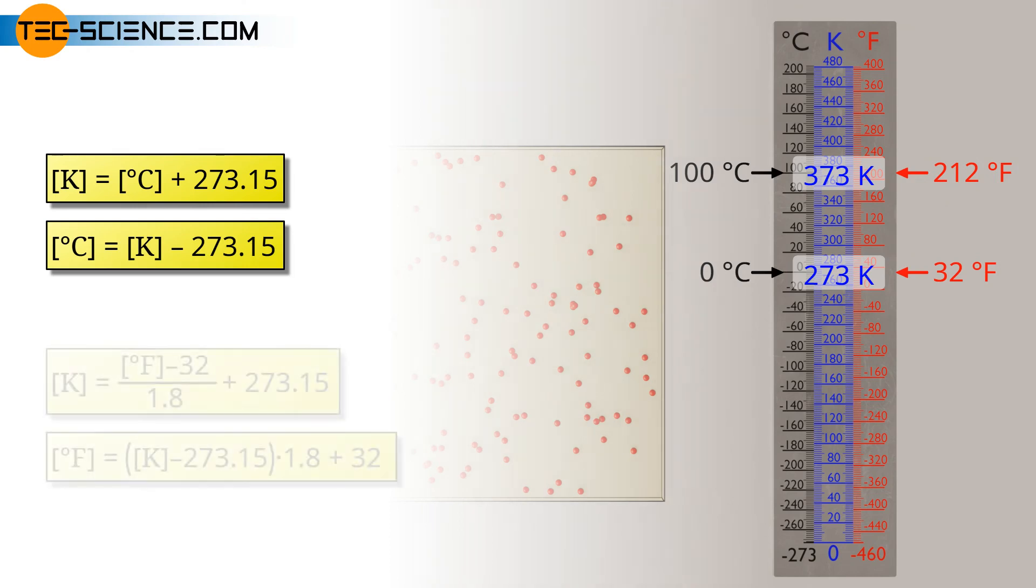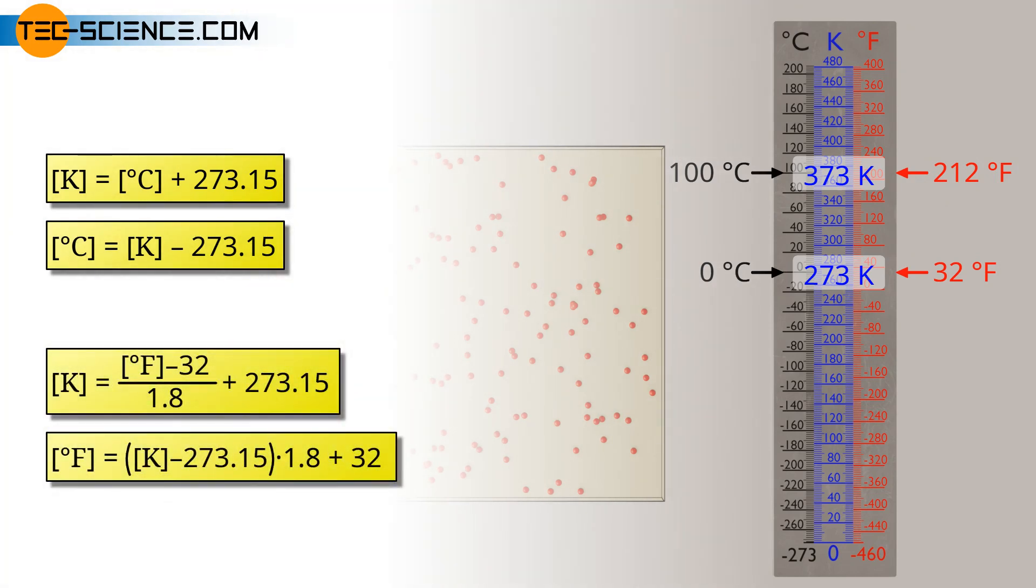For the conversion of a temperature on the Fahrenheit scale to the temperature on the Kelvin scale, and vice versa, the following formulas apply.